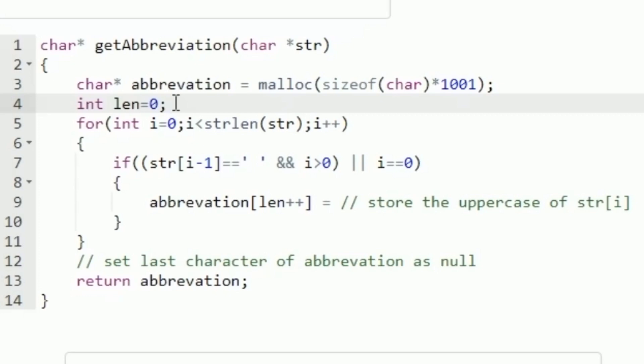Now we have to iterate through the characters of str. If the previous character is an empty space then the current character is the abbreviation, so we have to take that particular character. To iterate through str I am creating a for loop that iterates from 0 till i is less than the string length of str, and in every iteration we check whether the previous character is an empty space.